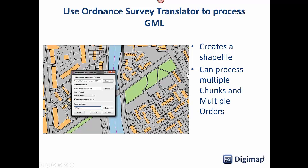The Ordnance Survey Translator basically creates shapefiles from your GML data and can process multiple tiles of data you get from the download process into a single layer to view in your GIS.